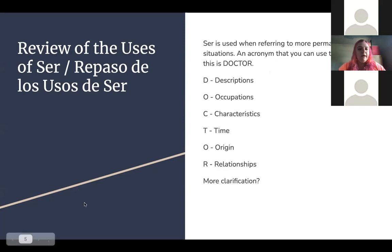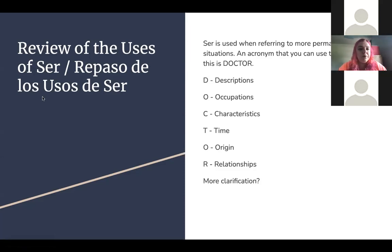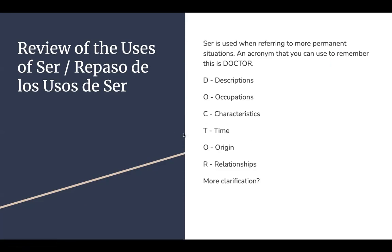T is for time, like when you're telling the exact time, the day of the week, the month, things like that. O is for origin — where someone is from, what something is made of, where something was made. And R is for relationships, whether it be friendships, family relationships, or romantic relationships. Does anybody have any questions on this?